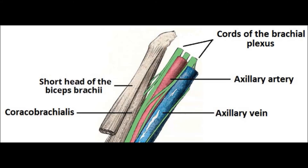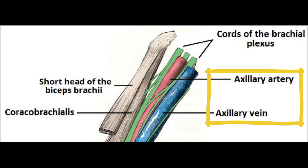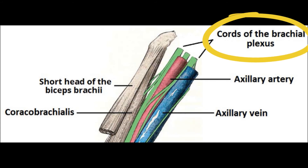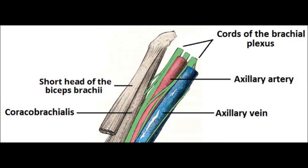Moving on to the contents — remember NAVL without the E. N is for nerve, A is for artery, V is for vein, and L is for lymph node. The contents are the axillary artery, the axillary vein, the axillary lymph nodes, and the nerve — the axillary nerve, which is a branch of the brachial plexus, so you can simply go with brachial plexus. You can also find fat tissue and some muscles, for example pectoralis minor, biceps brachii, and coracobrachialis.